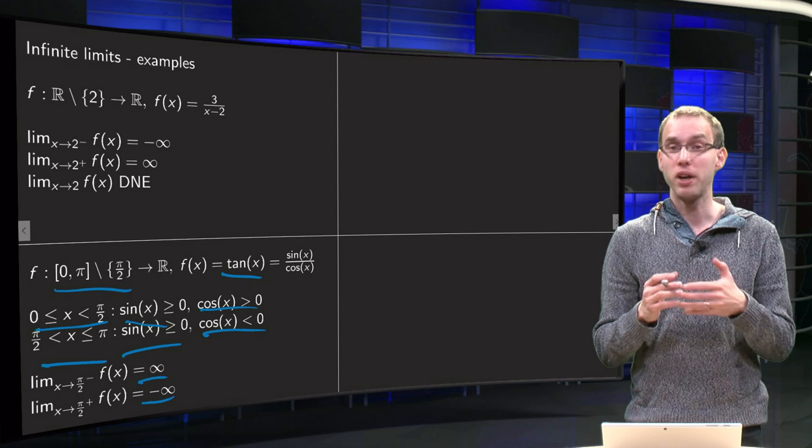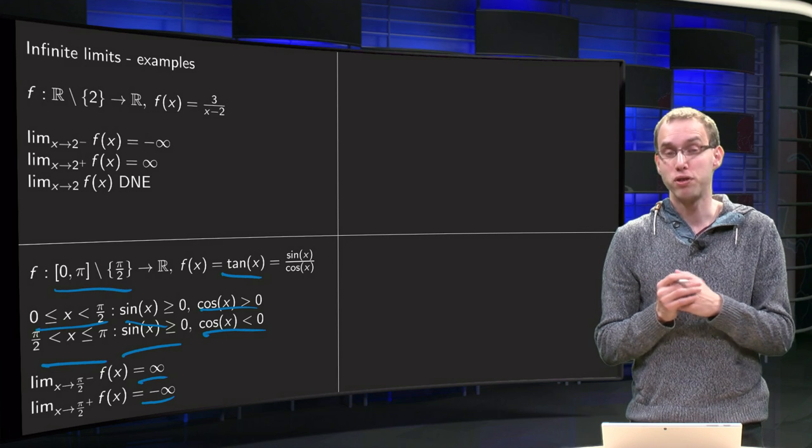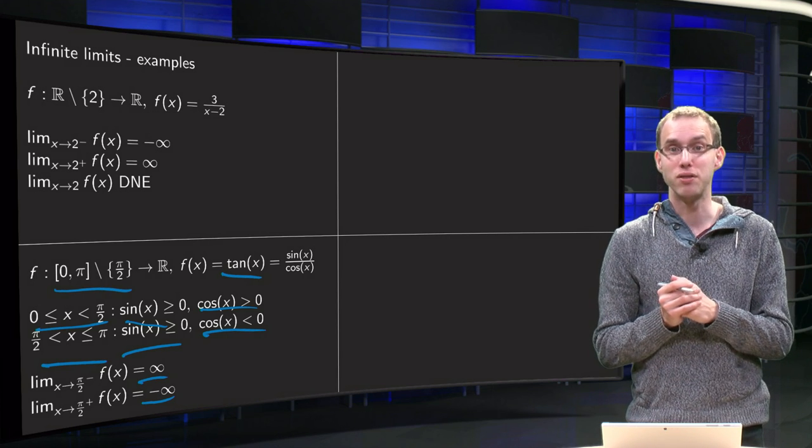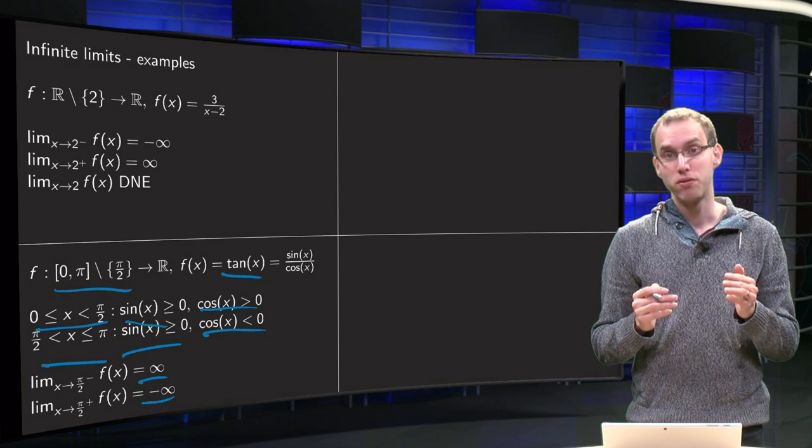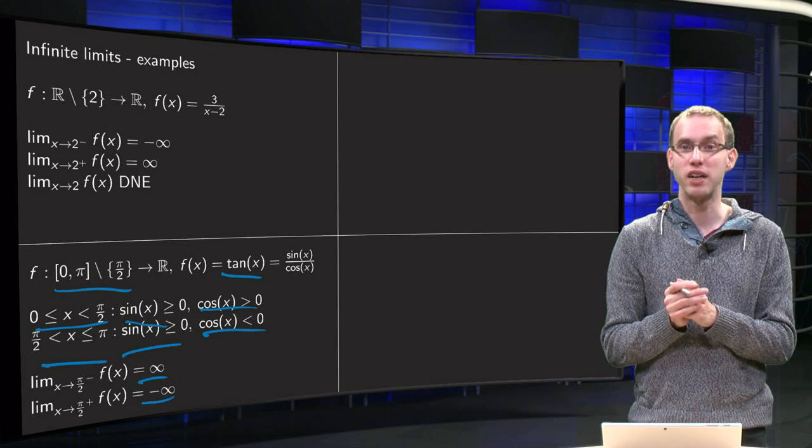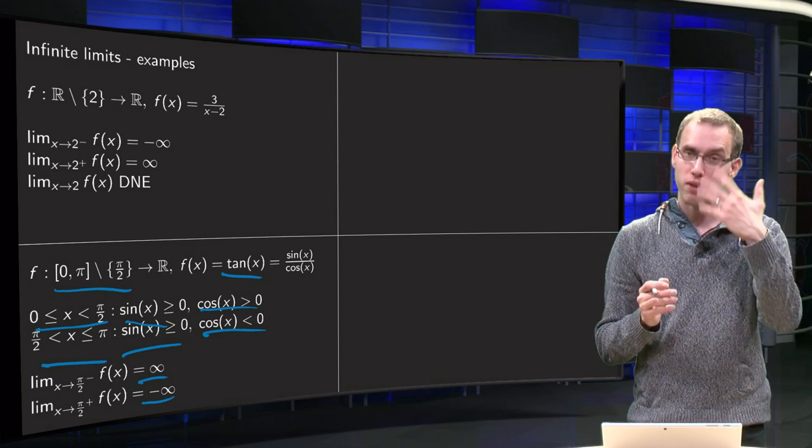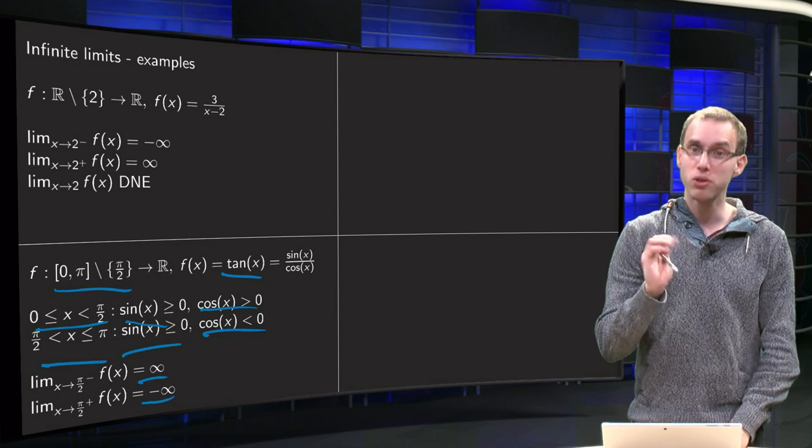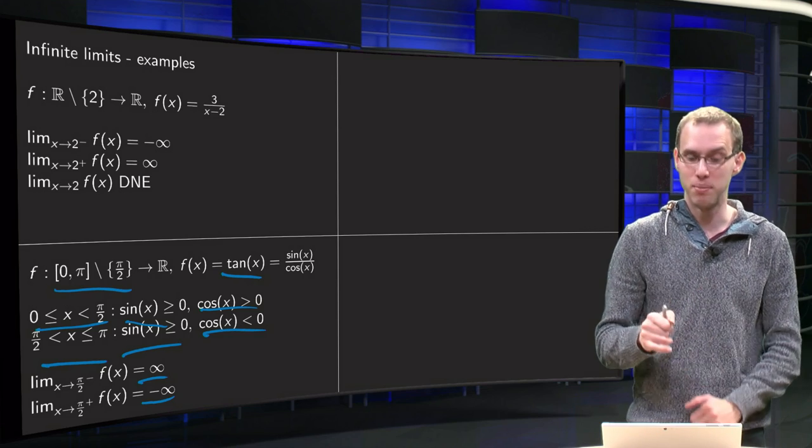So you see already with the function which is used very often as the tangent of x, you see that the limit x to π over 2 from the minus side is not the same as from the plus side and even worse they are both infinity and minus infinity, so also the tangent of x has such an infinite limit.